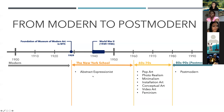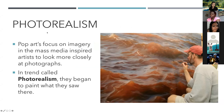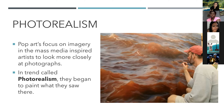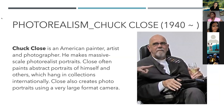We just saw abstract expressionist artists Jackson Pollock and William de Kooning, and pop artists Andy Warhol, Roy Lichtenstein, and Jeff Koons. Now we're going to see the rest of the art movements in the 60s and 70s in the United States. The first is photo realism. Pop art's focus on imagery in the mass media inspired artists to look more closely at photographs, and in the trend called photorealism they began to paint what they saw in photographs. The most popular artist of photo realism is Chuck Close, whose work we saw last week.